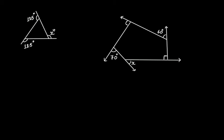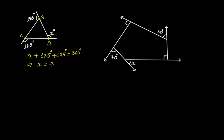In this figure, we have to find the value of x. Here, 125 degrees is an exterior angle, 125 degrees is another exterior angle, and x degrees is another exterior angle. It's a triangle. For any polygon, the sum of the exterior angles has to be equal to 360 degrees. So x + 125 + 125 = 360 degrees, giving x = 360 − 250 = 110 degrees.